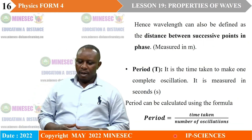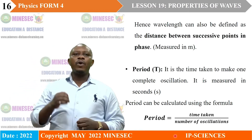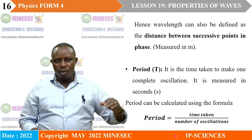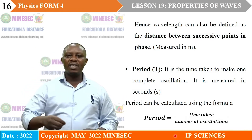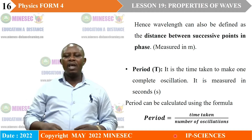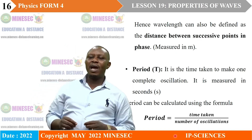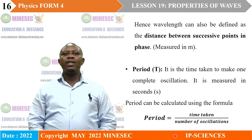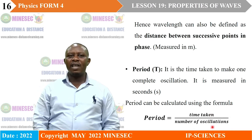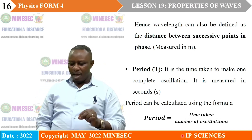What is period? The period of a wave is the time taken to make one complete oscillation. When a wave passes through a medium, it causes the particles to oscillate. The time taken for a particle to make one complete oscillation is what we call the period. It can be calculated from the formula: period = time taken divided by number of oscillations. The SI unit for period is the second.